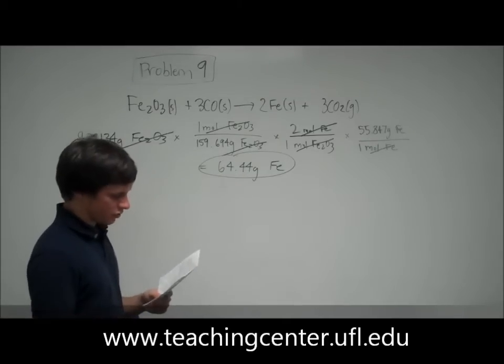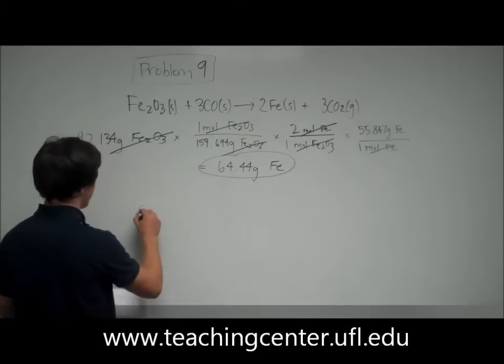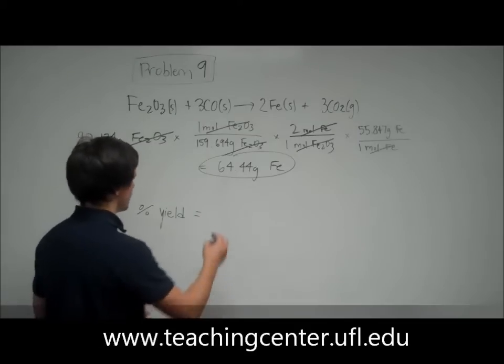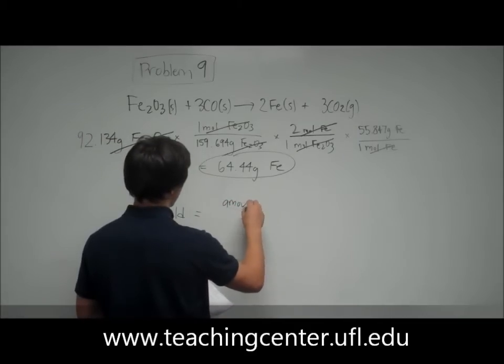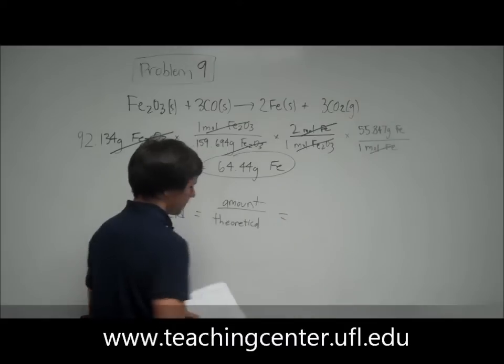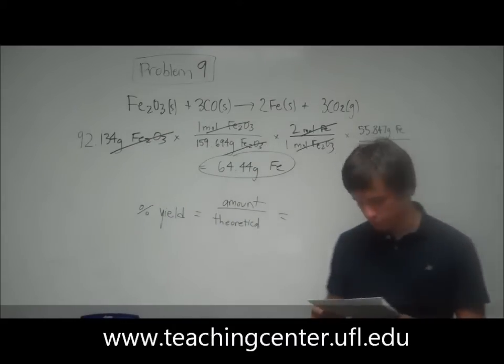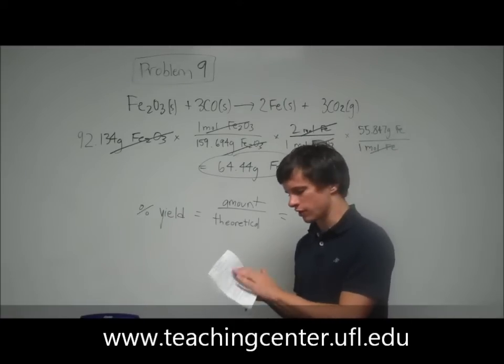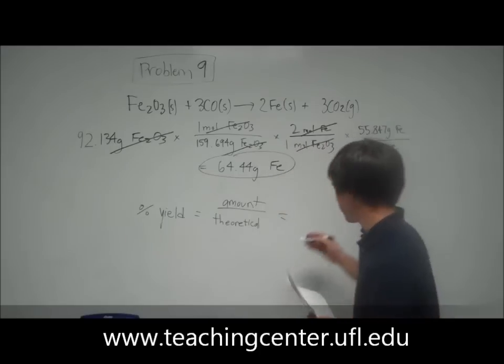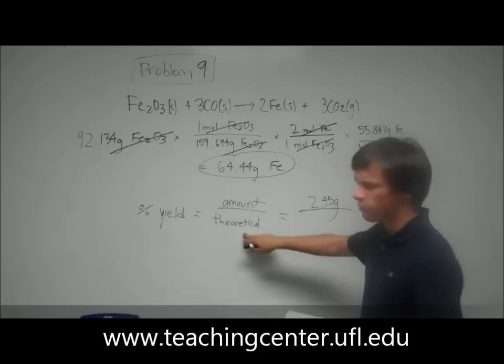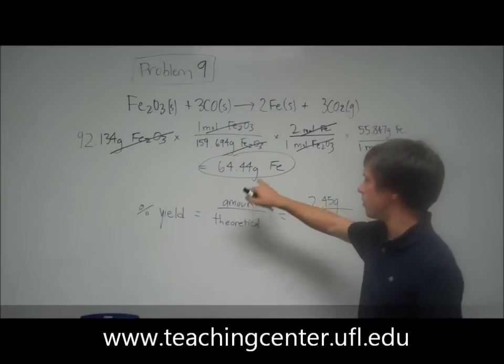So now it wants the percent yield. So you remember percent yield, probably done this in lab or something. So percent yield is the amount over theoretical amount. So the amount is 2.45 grams of iron. This is given to you in the question, and that's telling you what you really got. So 2.45 grams over the theoretical amount, which is the amount that you calculated with the numbers that you should get.